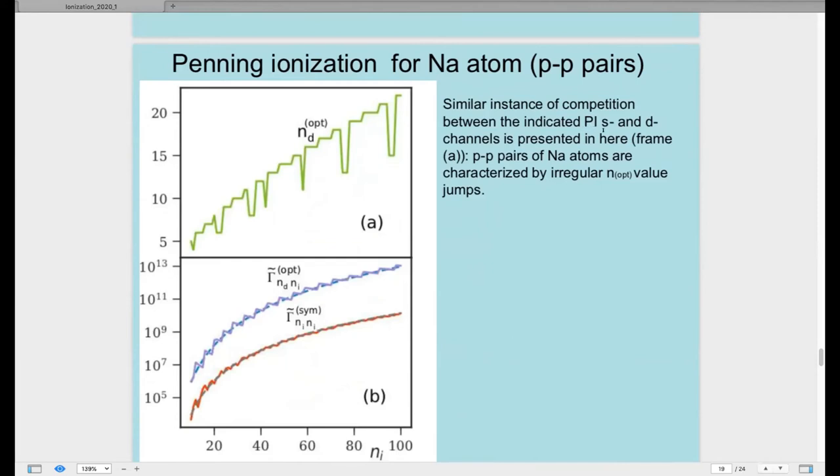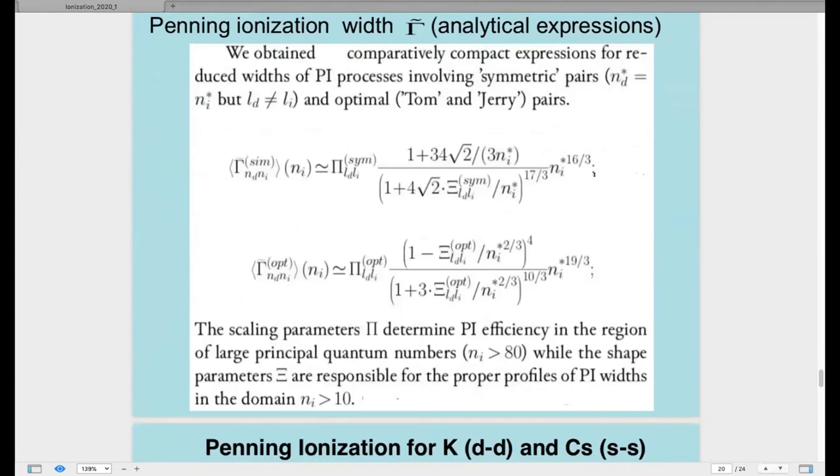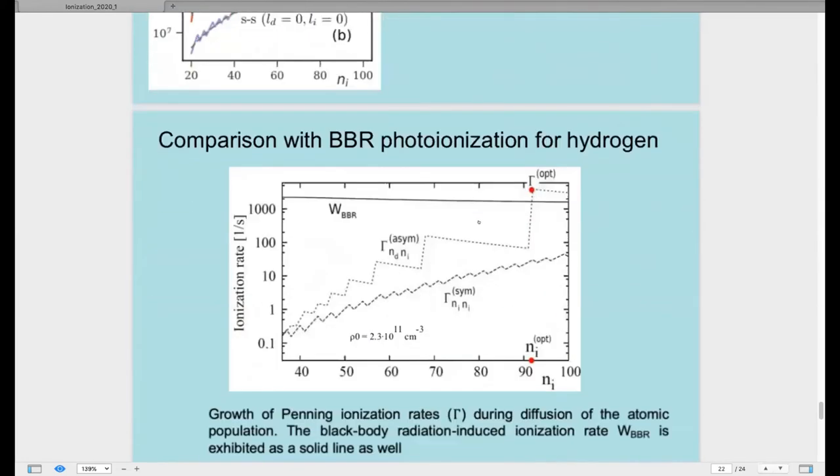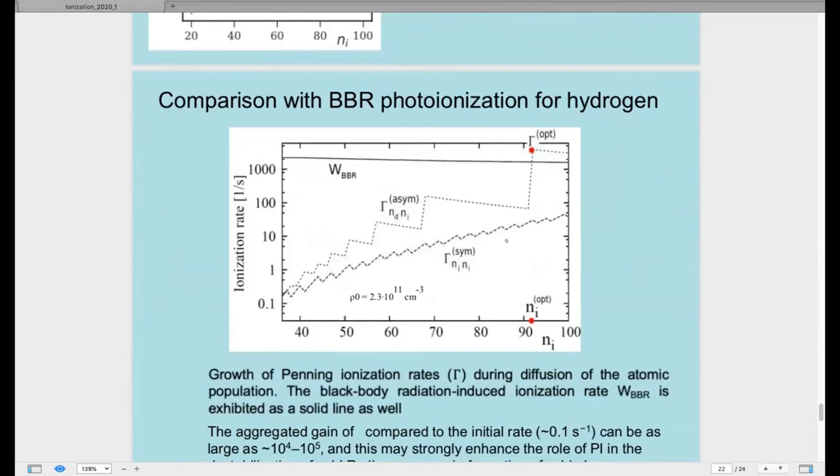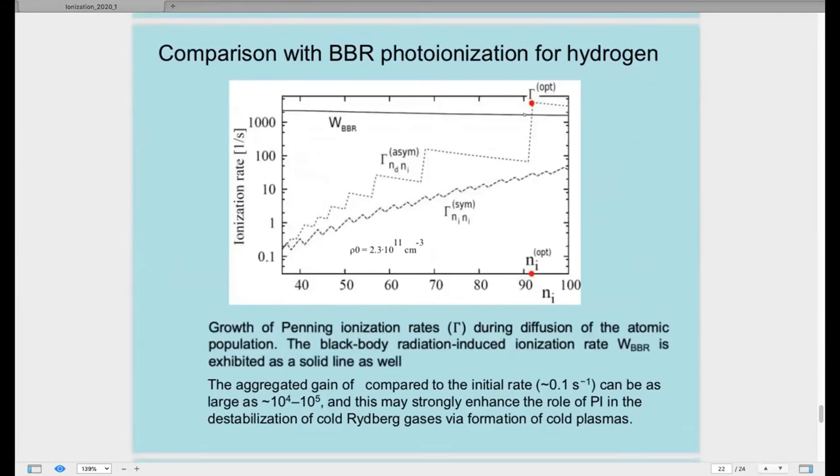Table of parameters for this: solid line is analytical expression and zigzag line is our numerical calculations. And we also can compare with blackbody radiation. In some point we can see that the ionization rate is greater than even blackbody radiation at some point.